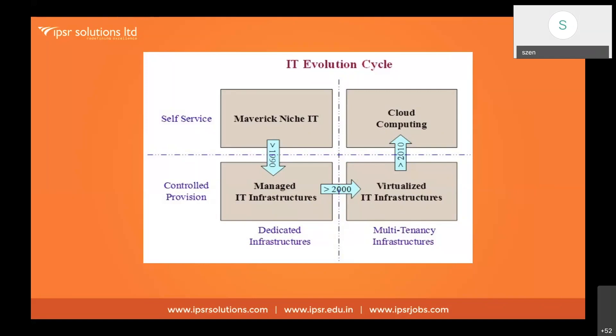Then we moved on to virtualized infrastructures, because in managed IT infrastructure — before virtualization — we were actually not using the full resources available in our systems. For example, if you have an i5 or i7 machine with 8 GB or 16 GB of RAM and 1 TB or more of storage, we are not using it completely. That is a drawback of the traditional way of IT infrastructure deployment.